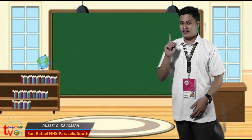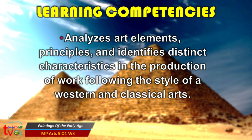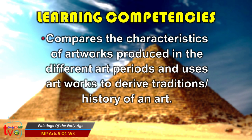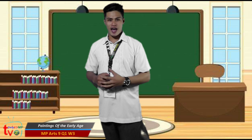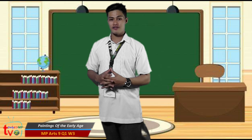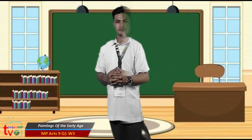Before we proceed, here are the target learning competencies in this lesson. First, analyzes art elements, principles, and identifies distinct characteristics in the production of arts following the style of Western and classical arts. Second, discusses the use and function of artwork by evaluating their utilization and combination of art elements and principles. Third, compares the characteristics of artworks produced in the different art periods and uses artworks to derive traditions or history of an art. Sit back, relax, and fasten your seatbelts as we begin our virtual time travel. Make sure to take down important details as we travel back from the past and discover amazing facts about the paintings of the early age.